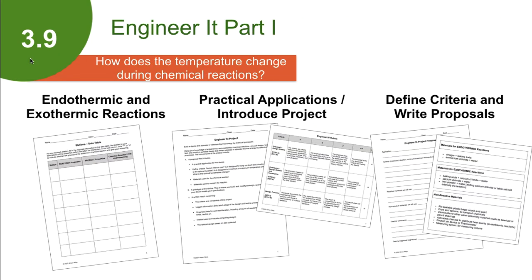In lesson 3.9, we revisit our chemical reaction stations and focus on the mixtures with noticeable temperature changes. What does this tell us about how energy changes in the system? Where does the energy come from to heat a mixture up, or what happens to the thermal energy if the mixture cools down? It has to go somewhere.